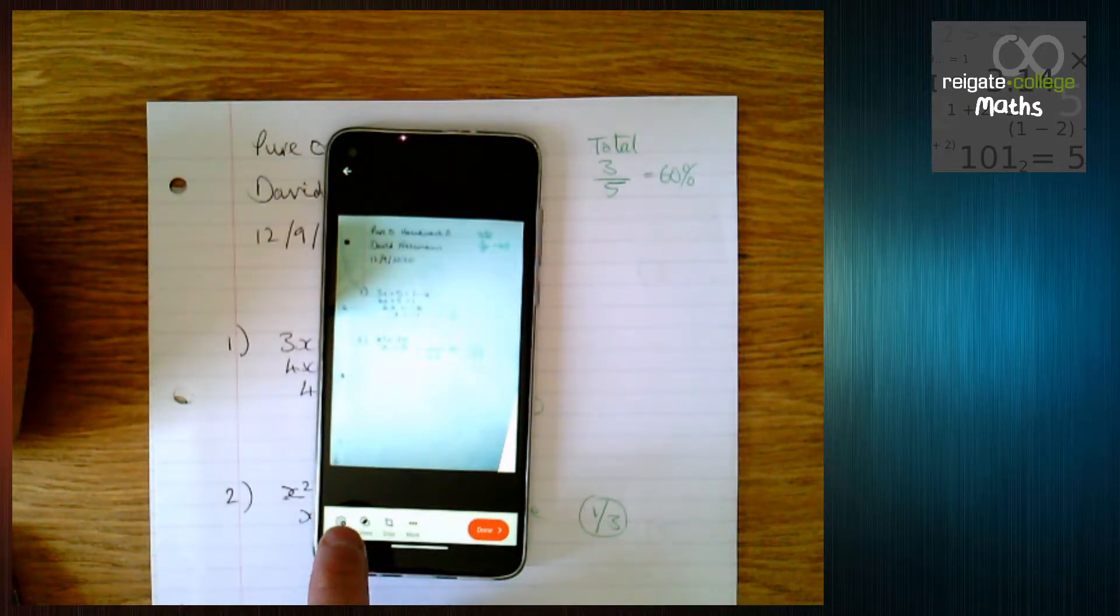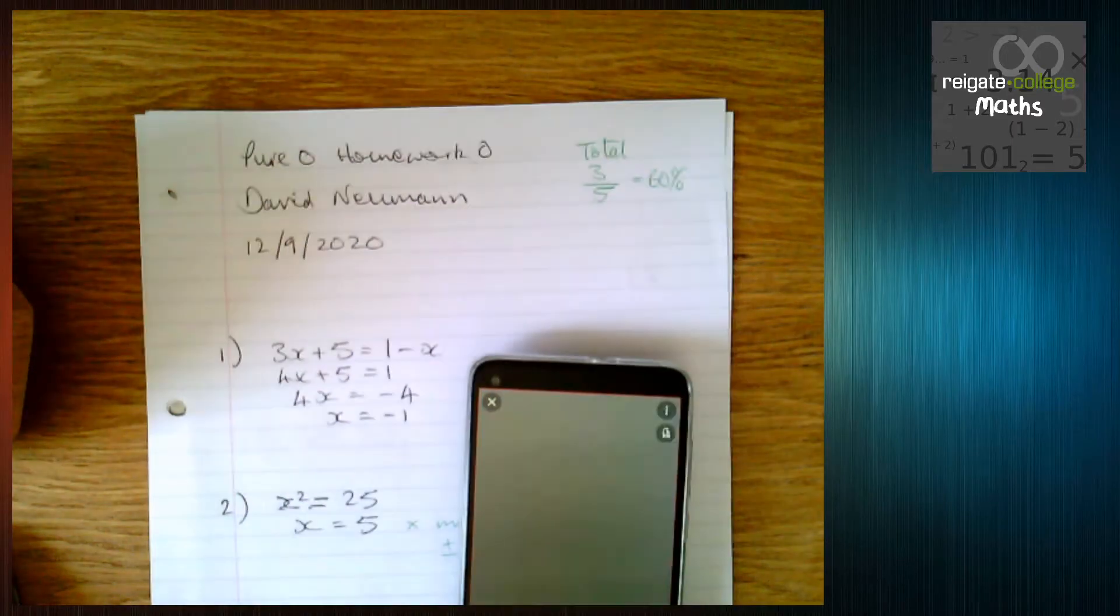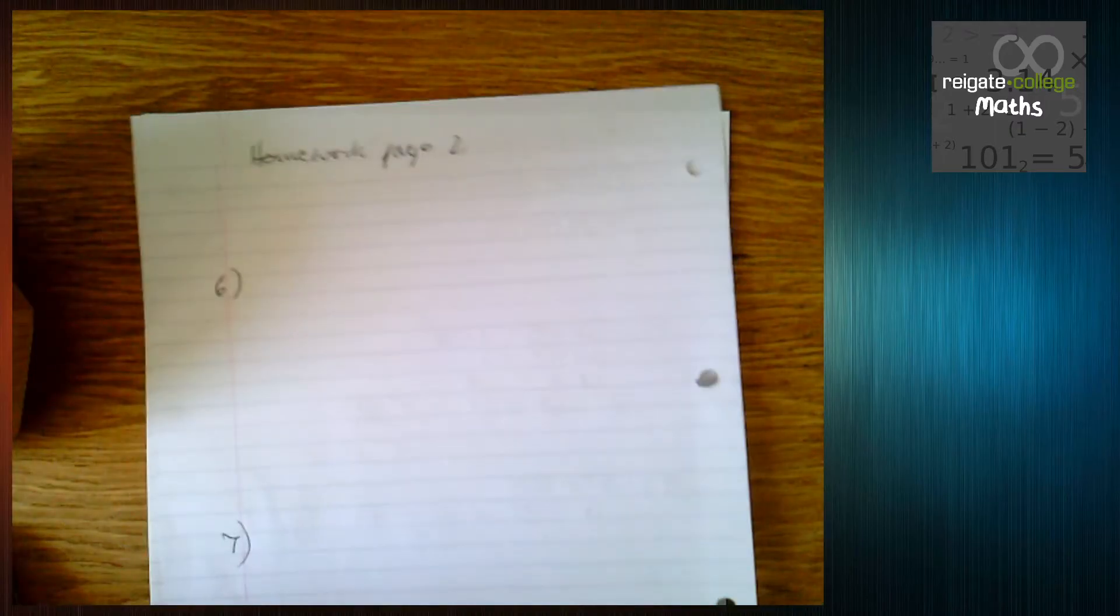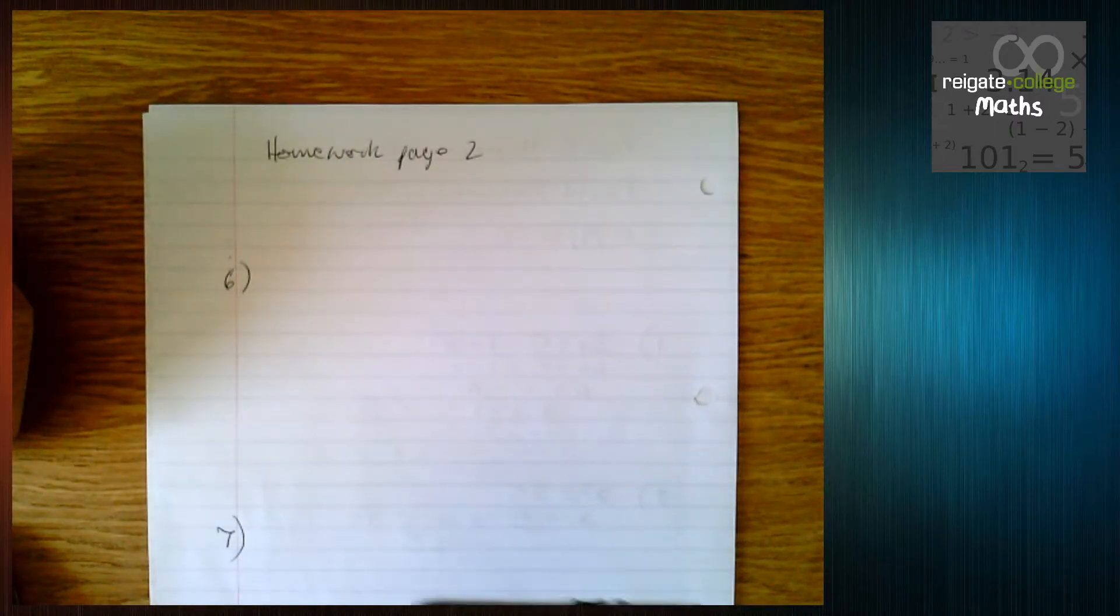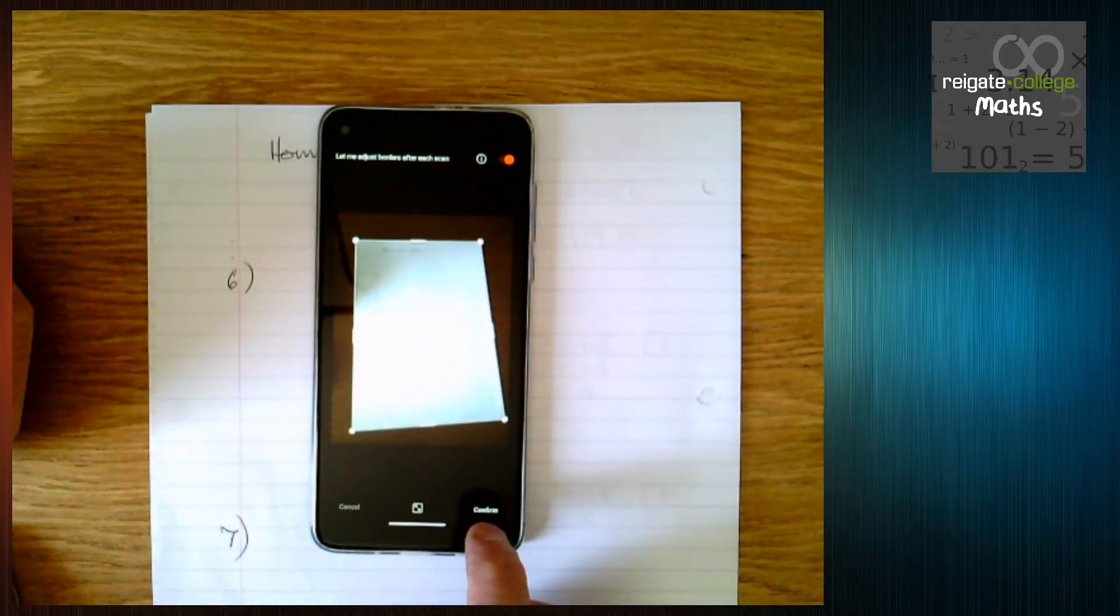And now I know that I want to add another page, so I'm going to click add and I'm going to capture the second page of my homework. Here it is, there it is, so a second page. Again I've got an orange box around the page. Office Lens is automatically doing that, cropping and resizing. Click confirm.